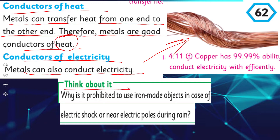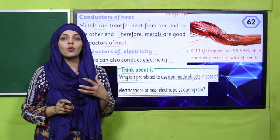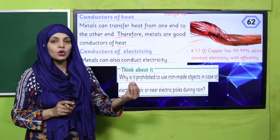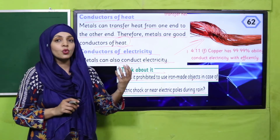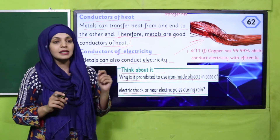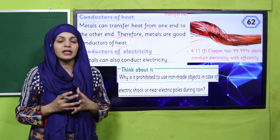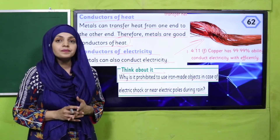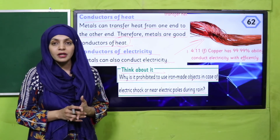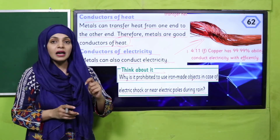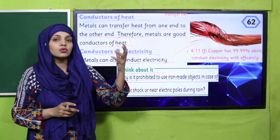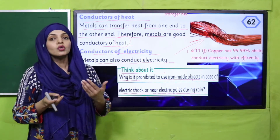Metals are also conductors of electricity — as shown with the copper wire. Think about why it is prohibited to use iron objects near electric poles or during rain. Iron objects — bijli ki chezon ke paas le jaana mana hai — because they are good conductors of electricity and can conduct electric current. If that current reaches you through the iron object, it is very dangerous.